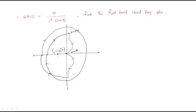Look at the minus 1 plus j0 point — how many encirclements do we have? This is the first encirclement and this is the second encirclement, so N equals 2. Now, how many open-loop right-hand side poles are there? There are zero open-loop right-hand side poles.